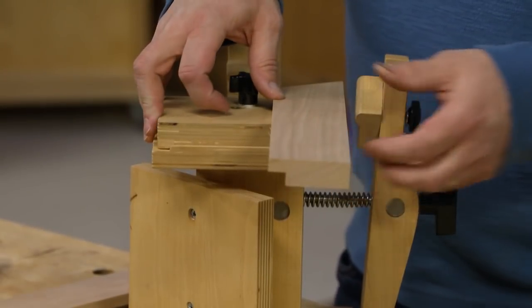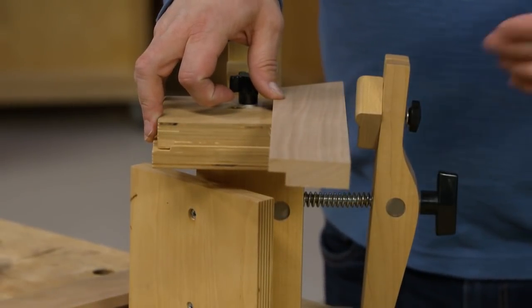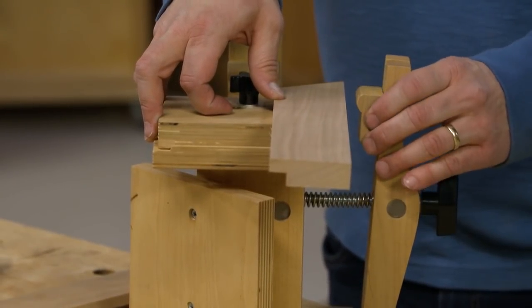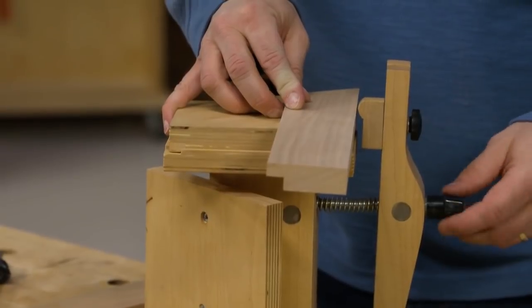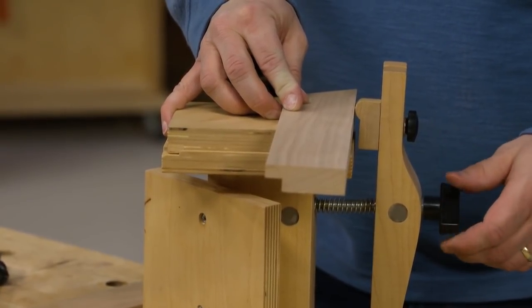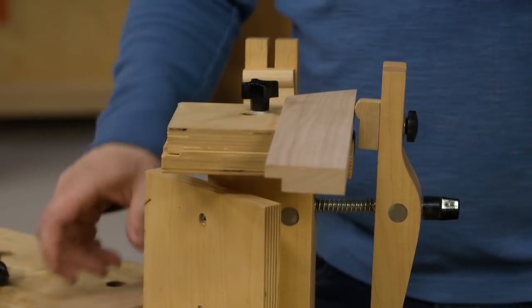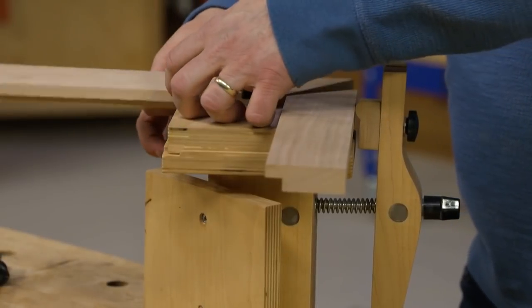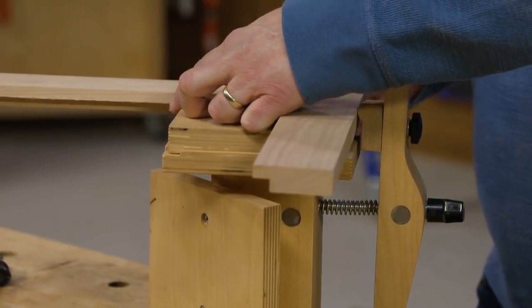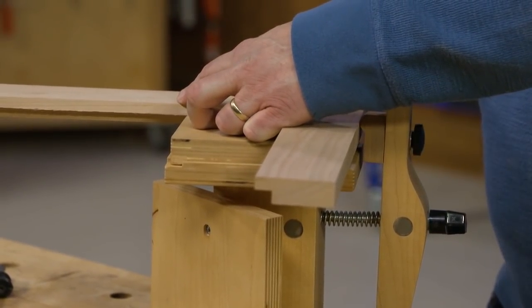Now you can also use this jig for that as well, in that you can register that rabbet on the jig face on that adjustable block. And when I clamp that down, now I'm registering off of that. That raises up the frame to give you an accurate reference there.